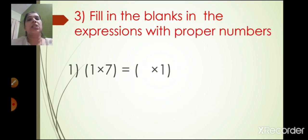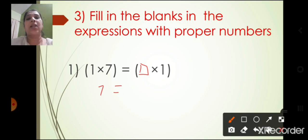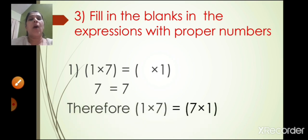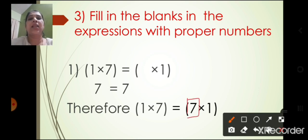The third question is: fill in the blanks in the expressions with proper numbers. The first one: 1 into 7 is equal to box into 1. Now 1 seven is 7. And for box into 1 to equal 7, the box must be 7. So 1 into 7 is equal to 7 into 1. The answer in the box is 7.